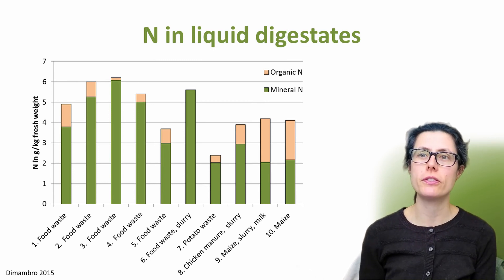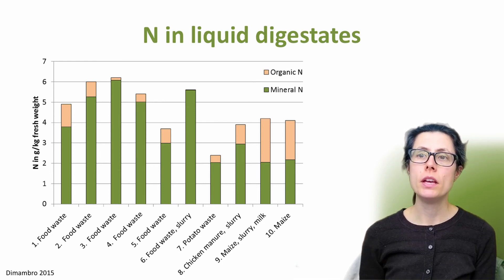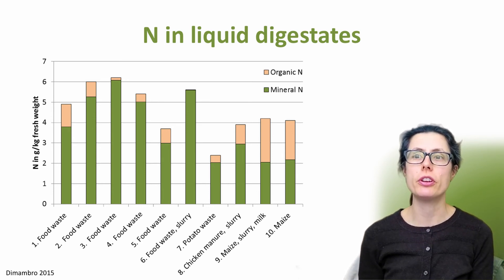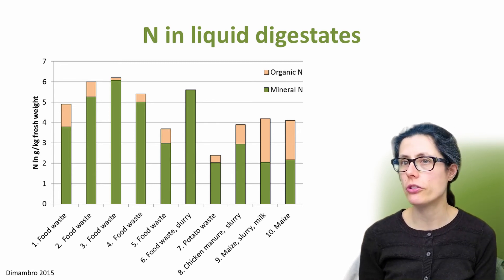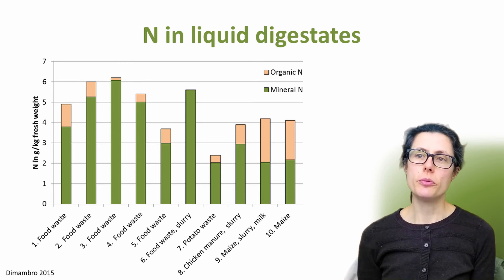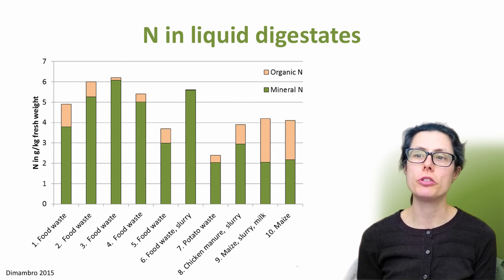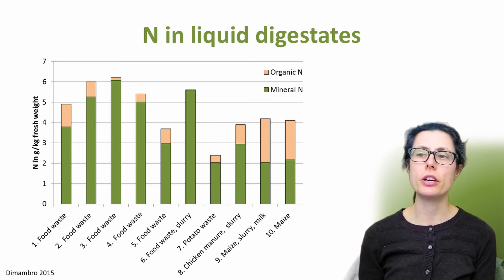Nitrogen content can also vary considerably between different types of digestates. Here's an example of 10 different liquid digestates, all from different anaerobic digestion sites in the UK. The orange bar is the organic nitrogen and the green bar is the mineral nitrogen, which is mostly ammonium in all of these digestates, with nitrates being less than 0.1%. The feedstock for these digestates includes food wastes, with the first five on the left all being just that. You can see how the organic nitrogen and the ammonium vary, but that the majority of the nitrogen in all of the digestates is ammonium. Digestate number five has been treated and has had the majority of the solids removed through screening, and this has a lower nitrogen content than the others. The two digestates on the right were both produced from maize and have a higher portion of organic nitrogen than the others.